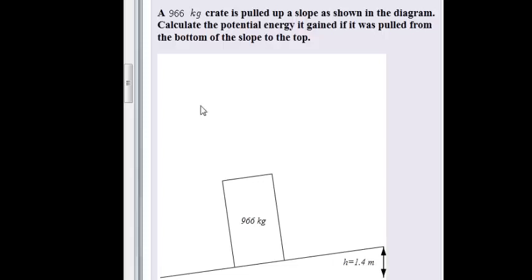A 966 kg crate is pulled up a slope, as shown in the diagram. Here we see our diagram, there we see our crate. What did they say about this slope? They don't say anything, they just say calculate the potential energy it gained if it was pulled from the bottom of the slope to the top.